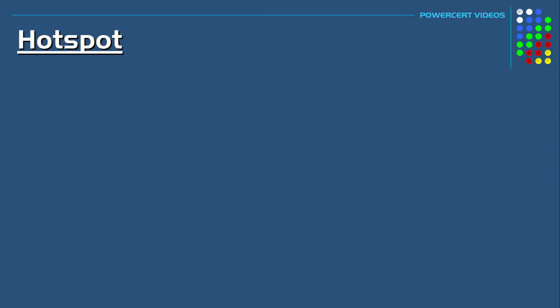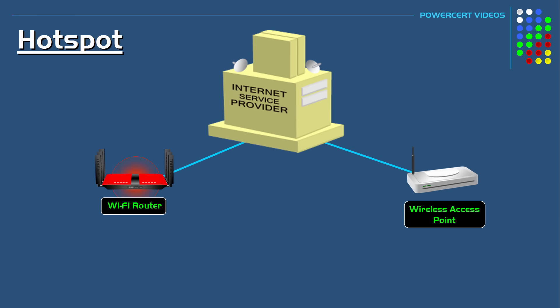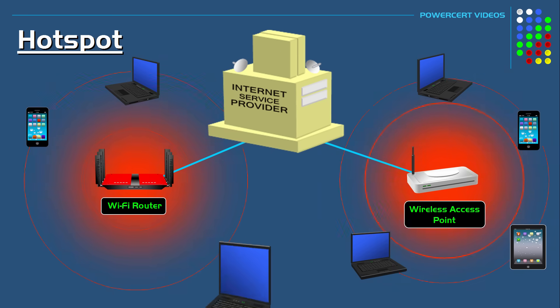Hotspots are created with a Wi-Fi router or a wireless access point that's connected to an internet service provider. These routers and access points will broadcast a Wi-Fi signal so that people nearby can connect and access the internet.